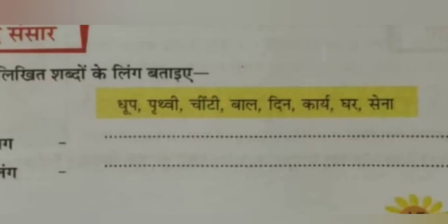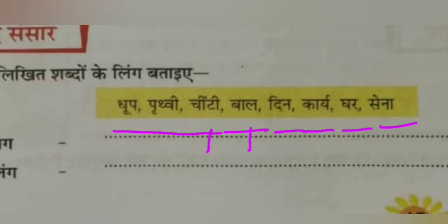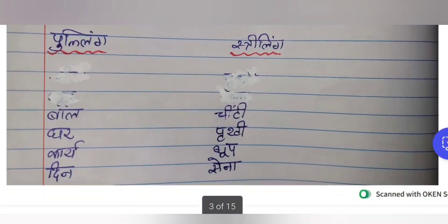Here they have given a few words to categorize: Dhoop — sunlight, Prithvi — earth, Chinti — ant, Bal — hair, Din — day, Kariya — work, Ghar — house, Sena — force. We have to categorize each of these as pulling or striling.